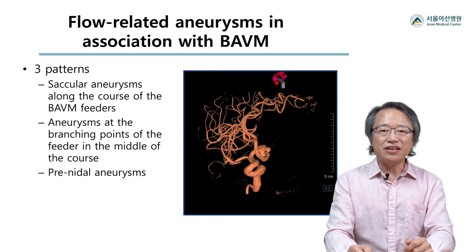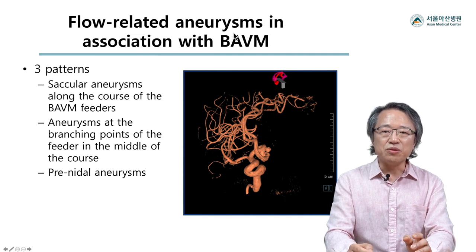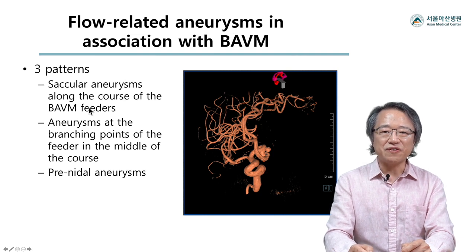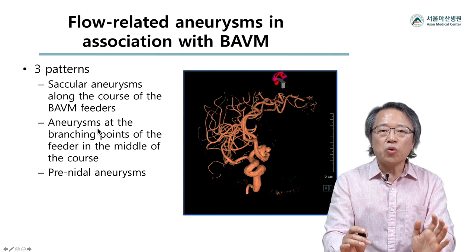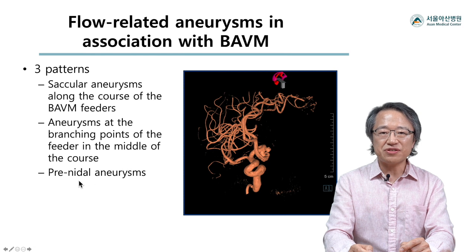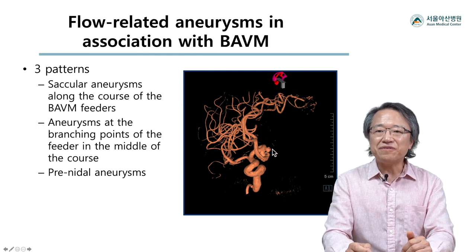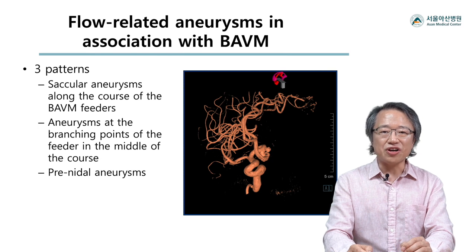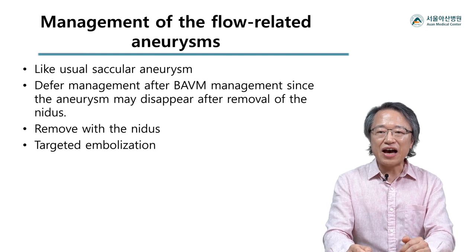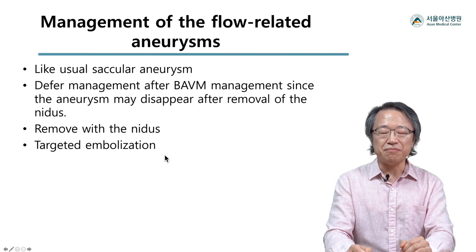Flow-related aneurysms are literally aneurysms formed in arterial regions with abnormal flow stress. They are commonly seen along the arterial feeders of brain AVMs. For these lesions, we can defer individual aneurysm treatment since some may be reversible after successful eradication of the high-flow lesion. If we cannot control the high-flow lesion effectively, then targeted individual aneurysm treatment can be done.